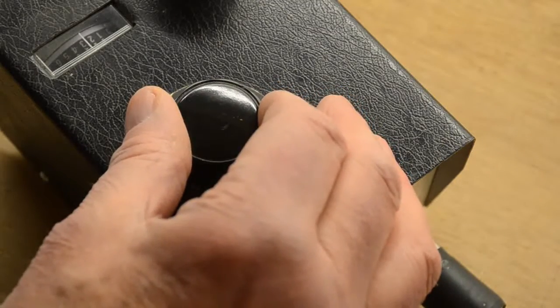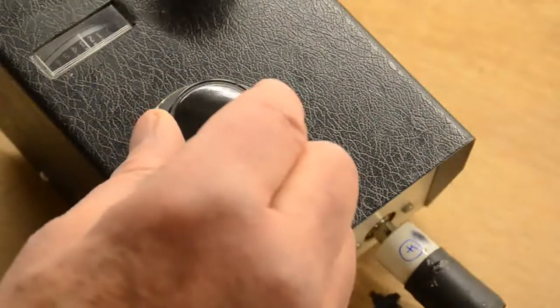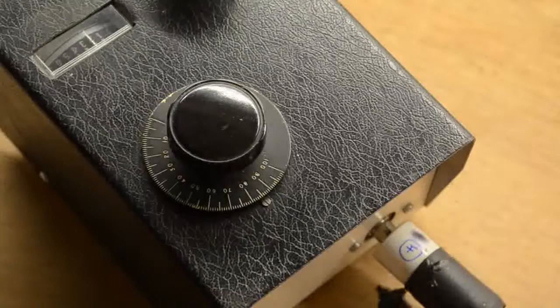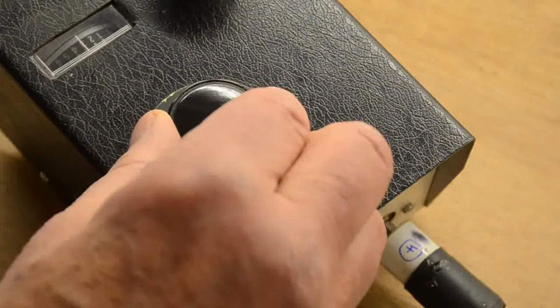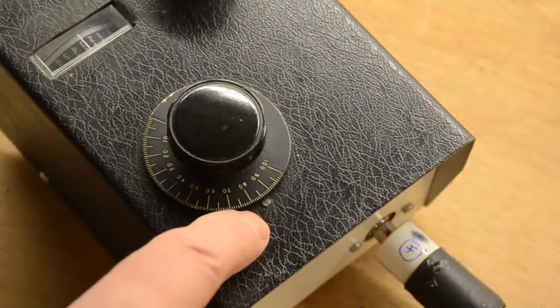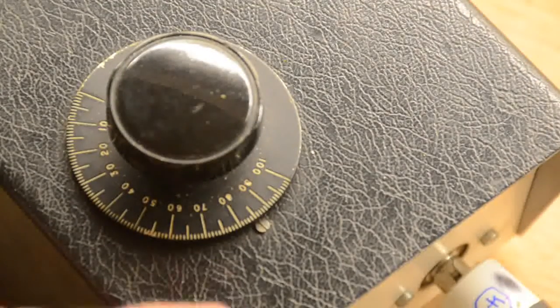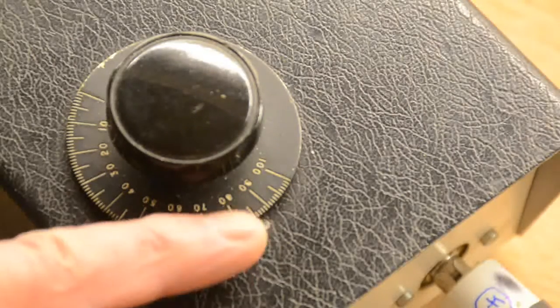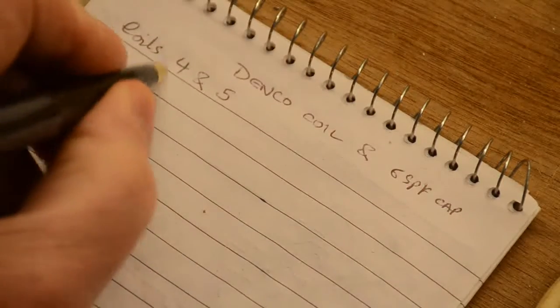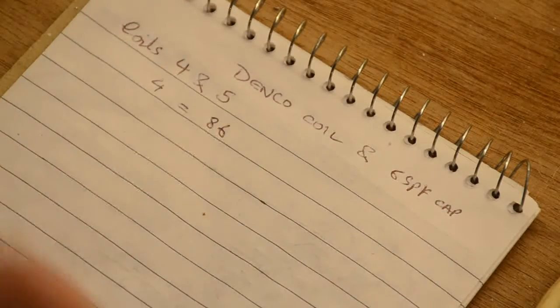If I move the coil away a little bit, you can see the needle comes up. Moving it a bit more, there's quite a gap now between them. Let's read the dial. We have about 86 on the reading there, so we put down coil 4 is about 86. We'll check this against the chart in a minute.